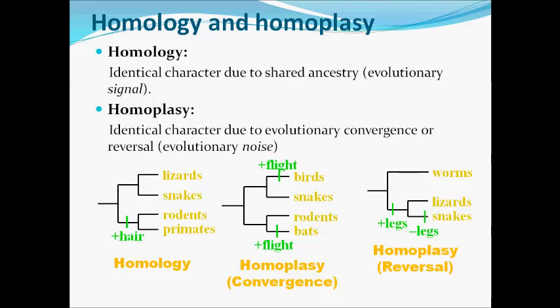Next is the concept of homology and homoplasy. Homology means identical character due to shared ancestry — this is an evolutionary signal. As shown in the figure, rodents and primates both have hair because their ancestors had hair.